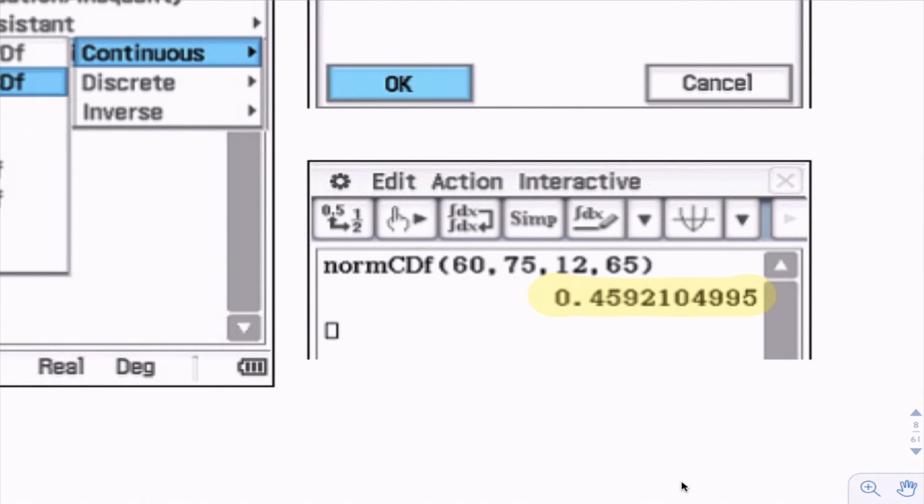So normCDF, the order here is important: lowest value, high value - so it's between those two values - then the standard deviation, and lastly the mean.